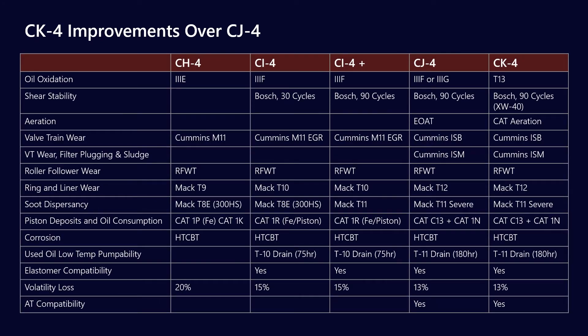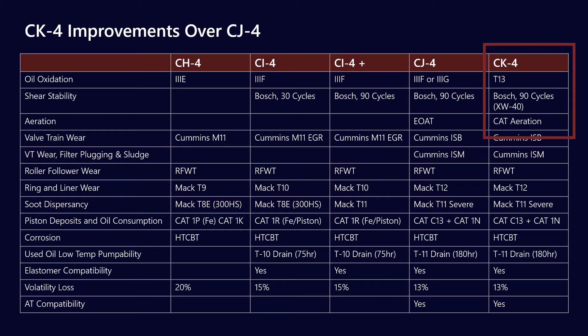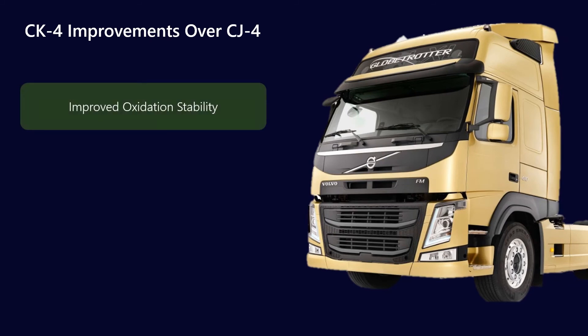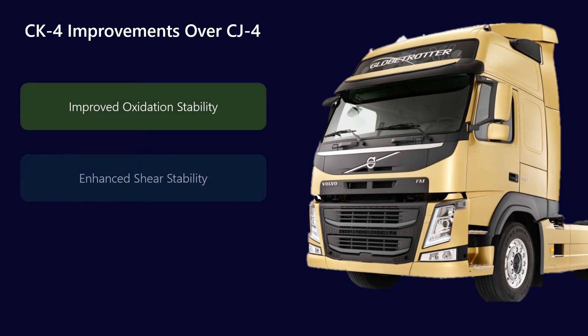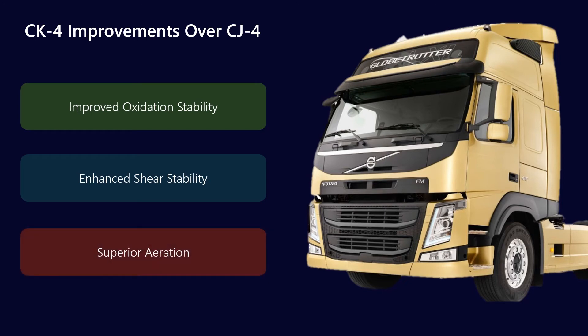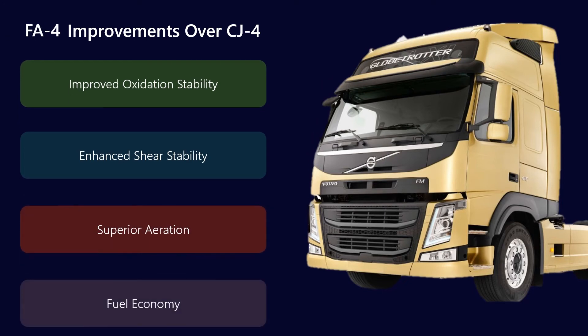What are the improvements in the requirements for CK4 versus CJ4? They're primarily focused around oxidation, shear stability, and aeration — those were the main test criteria tightened with the PC11 spec. So CK4 delivers improved oxidation stability, improved shear stability, and improved aeration. But for FA4, we can also add fuel economy as a fourth benefit, as they were really targeting fuel economy.